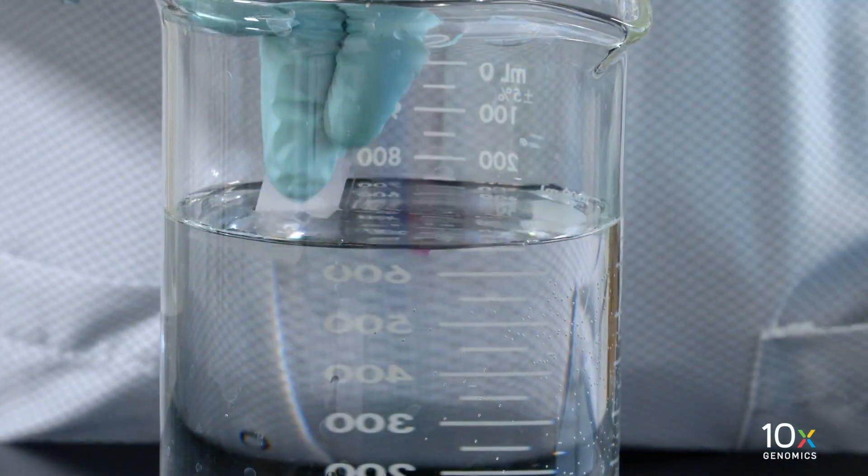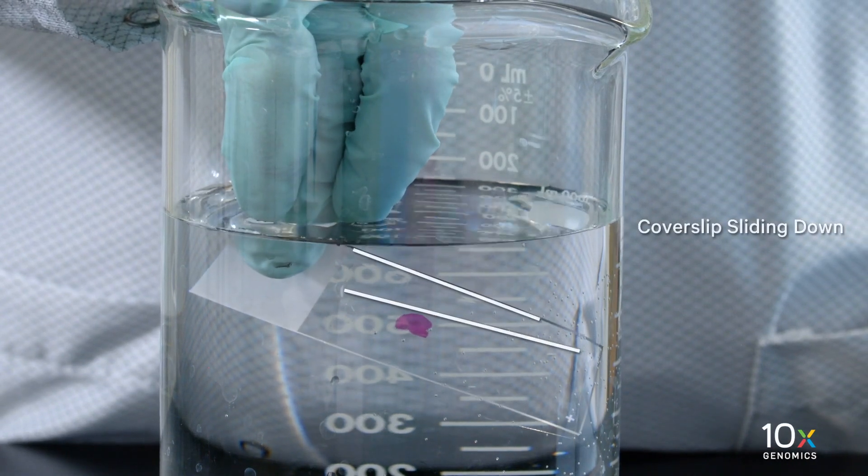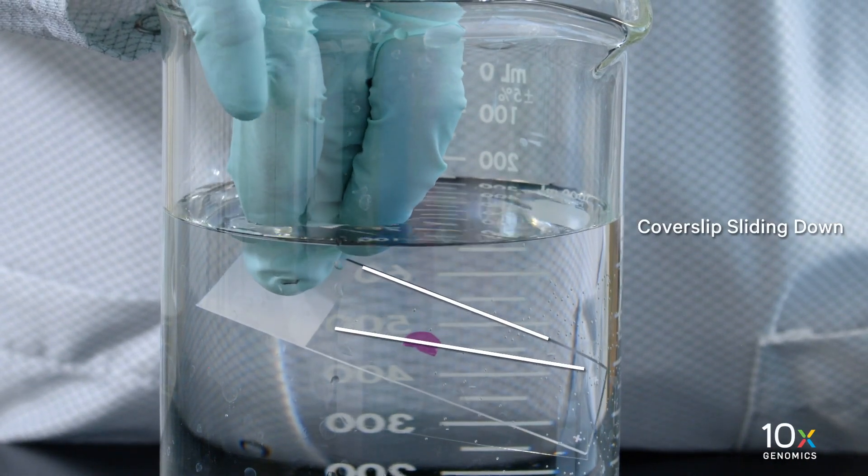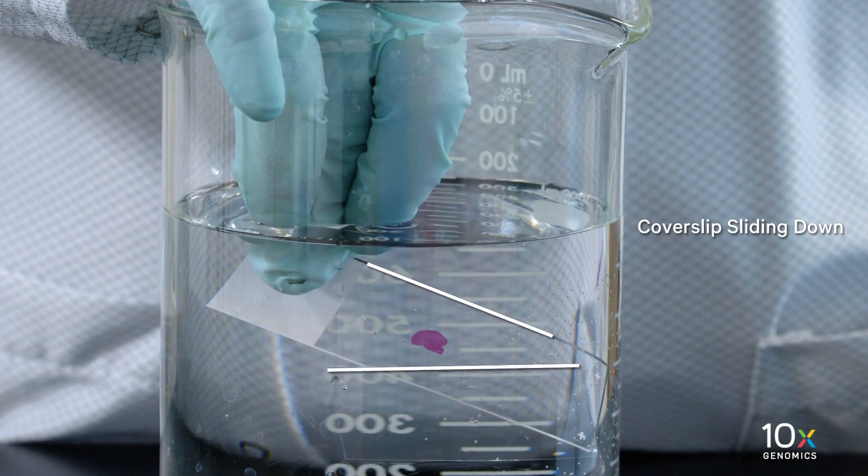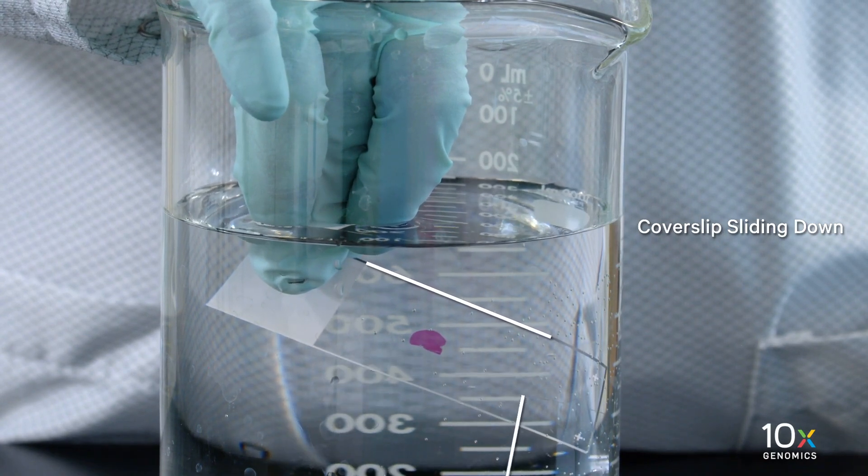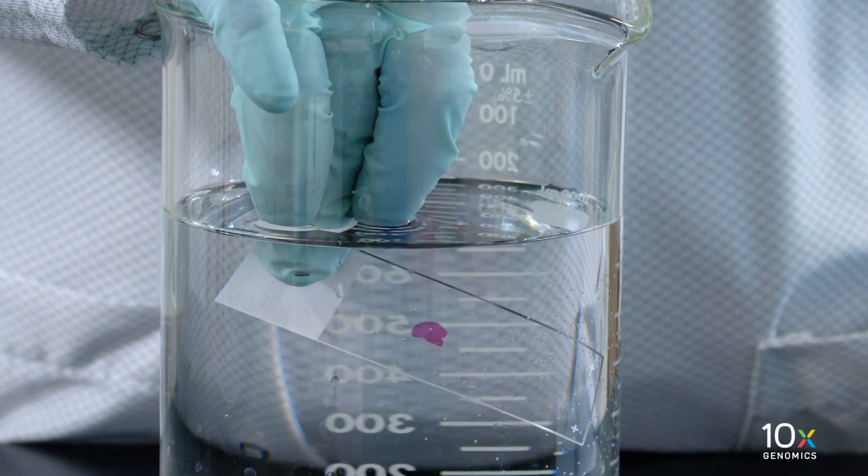Immerse the slide sideways or in a horizontal orientation in the beaker containing 800 milliliters of water with the coverslip surface fully submerged. Hold the slide in the water until the coverslip slowly separates away from the slide.